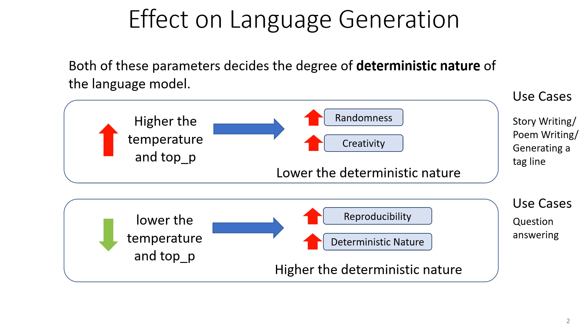If we set higher values to Temperature and Top_P values, the deterministic nature of the language model becomes lower. In other words, the language model will behave in a more random manner in such configuration. If we generate outputs for the same given input prompt, every time it generates something different and random. This can also be considered as the creativity of a language model.